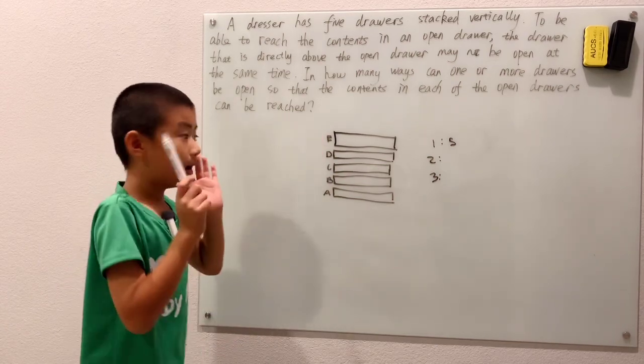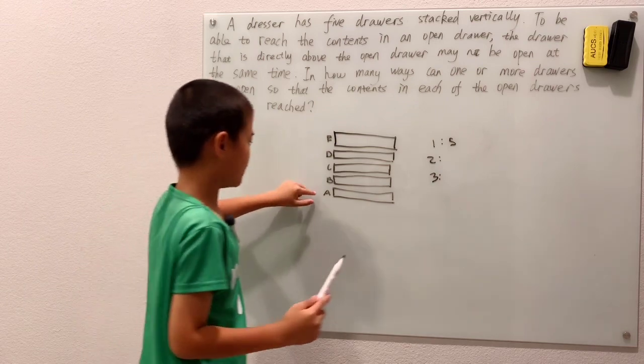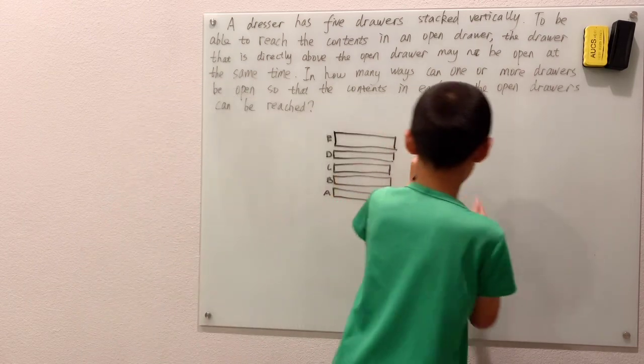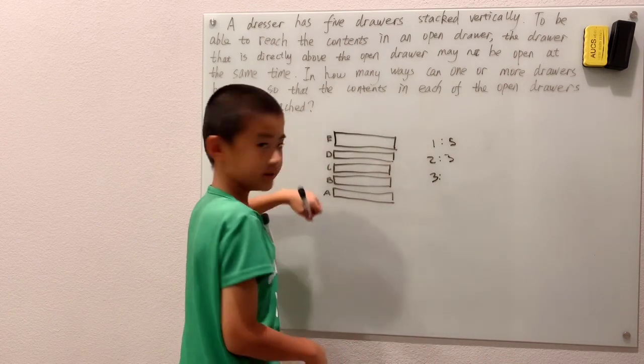Again, I'm not counting anything over again because you'll see why in a minute. So for A, there's three choices: E, D, C. That's A-E, A-D, and A-C.